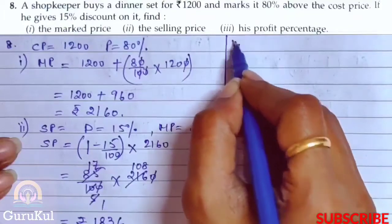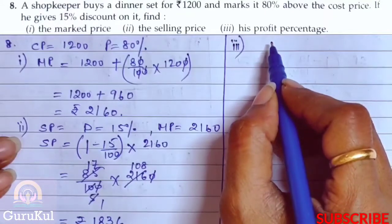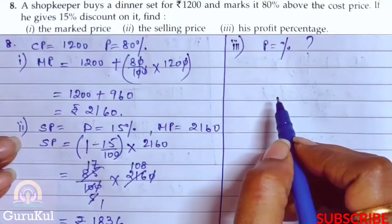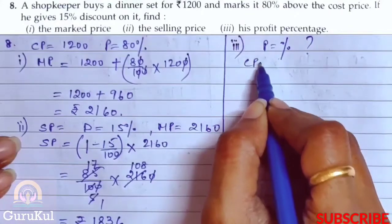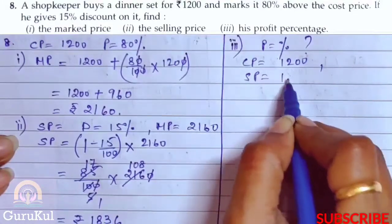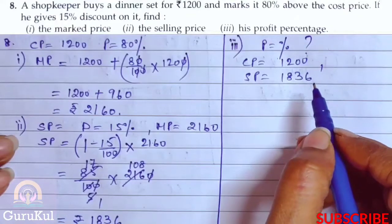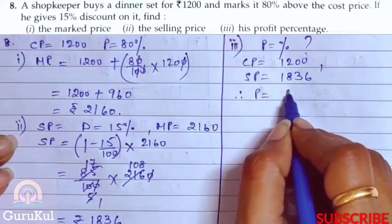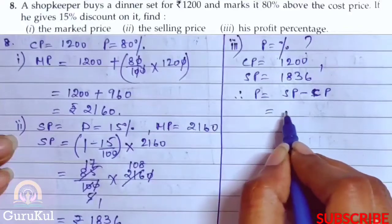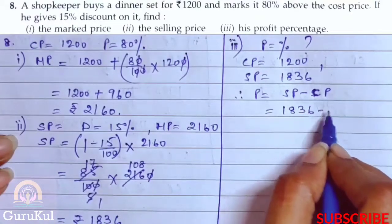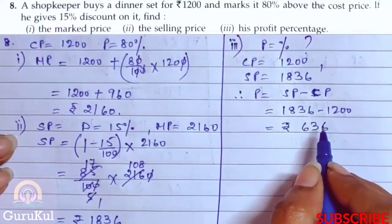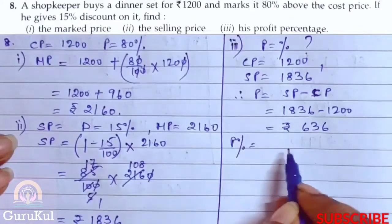Now the third part of question number 8 — we need to find his profit percent. CP was rupees 1200 and SP we found was 1836. Therefore profit is SP minus CP, that gives us 1836 minus 1200 equals 636. Now we need to calculate the profit percent.